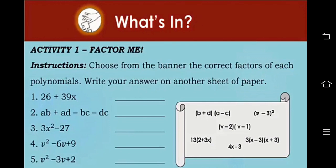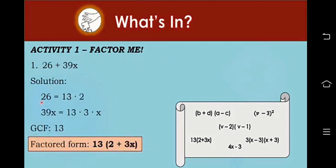What's in? Let's start this lesson with Activity 1, Factor Me. Choose from the banner the correct factors of each polynomial and write your answer on a separate sheet of paper. Here we have a banner of factors: the quantity of B plus D, the quantity of B plus D times the quantity of A minus C, the square of the difference of V and 3, the quantity of V minus 2 times the quantity of V minus 1, 13 times the quantity of 2 plus 3X, 4X minus 3, and 3 times the quantity of X minus 3 times the quantity of X plus 3. I'm going to do number 1 as an example.